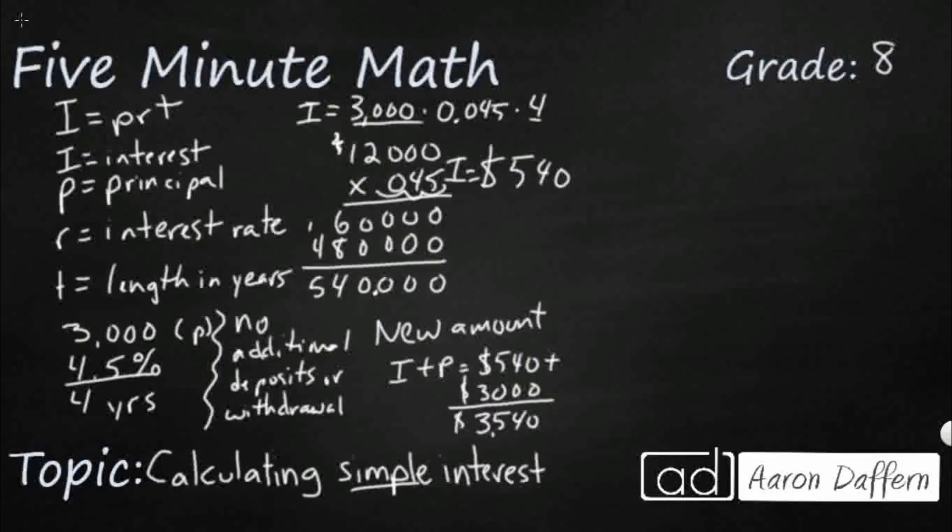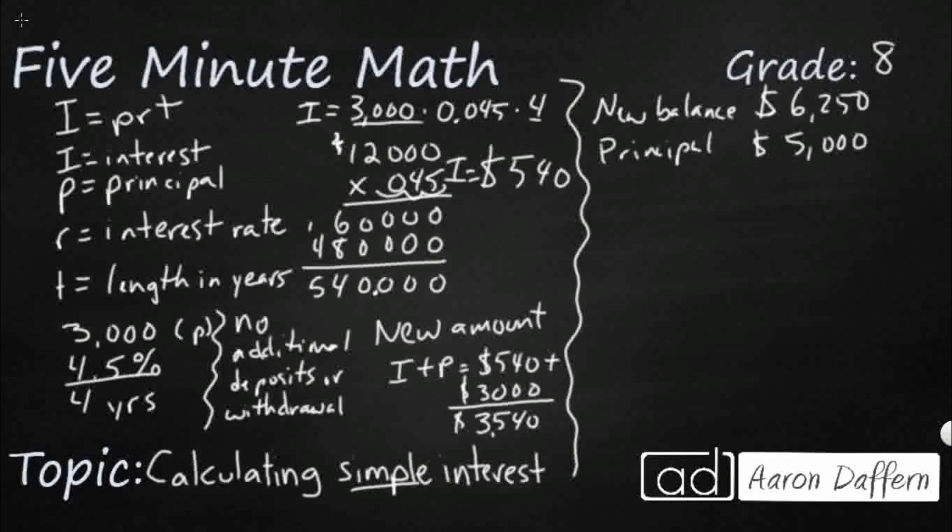Also, sometimes they might give it to you in reverse. They might say you've got a new balance and give you that number. So they might say, let's say, $6,250, and the principal is $5,000, and the time is five years. And they want to know what's the interest rate.